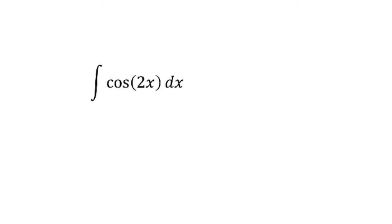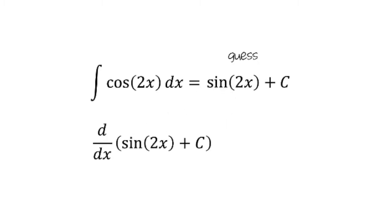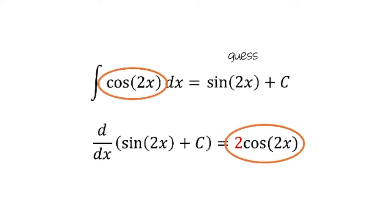Let's begin by considering how we might integrate the composite function cos(2x). Since the antiderivative of cosine is sine, we might guess that the general antiderivative is sin(2x). However, if we check this answer by differentiating, we need to apply the chain rule and we'll get 2 times cos(2x), which does not match the function we were originally integrating. This means our guess was incorrect and sin(2x) is not the general antiderivative of cos(2x).